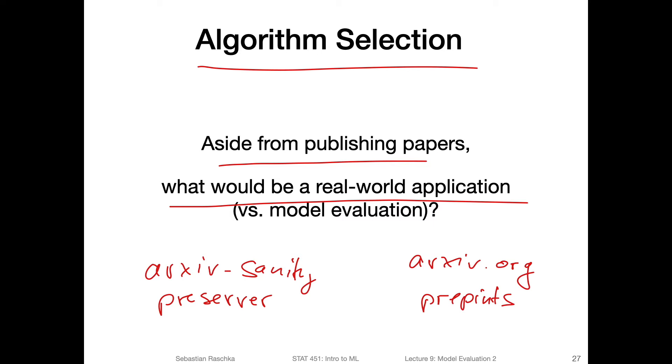The arXiv sanity preserver is a web application developed by Andrej Karpathy. It uses a support vector machine for each user - you can create an account - and then the support vector machine learns from papers you like. You can like papers and search for similar papers. The support vector machine, one for each user, will learn from your behavior and then make recommendations of articles you might be interested in. In that case, it was important to select a good algorithm that is maybe fast, but also accurate when it learns from the user behavior. So there would be a case where algorithm selection would be an interesting topic for developing such an application.